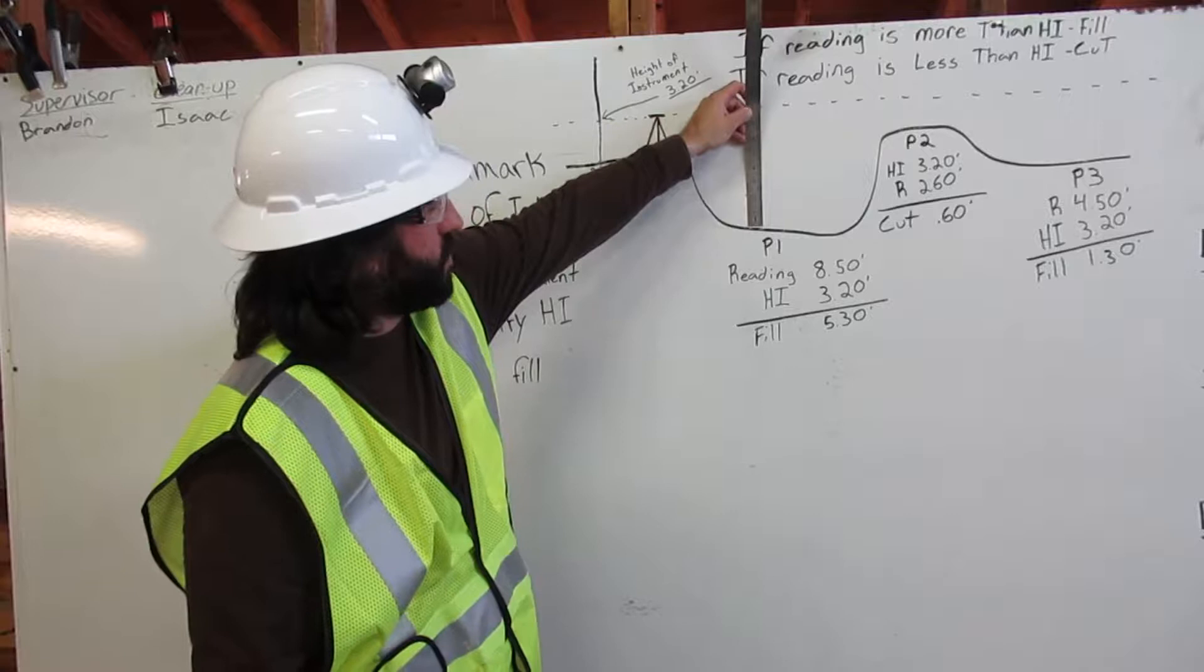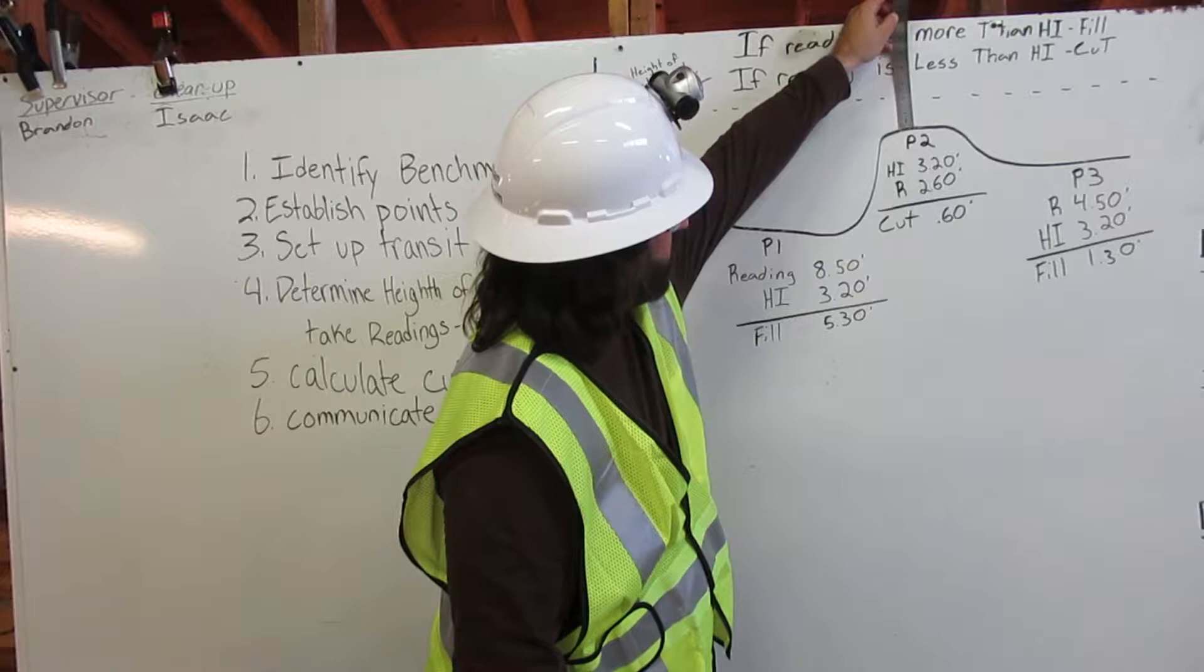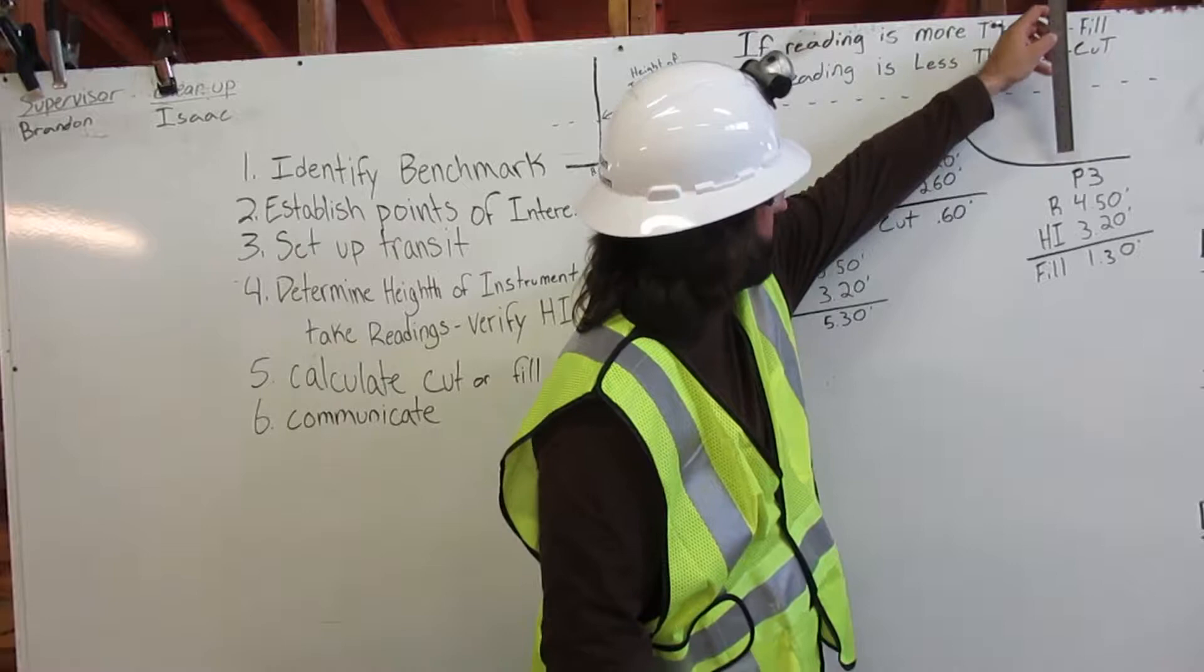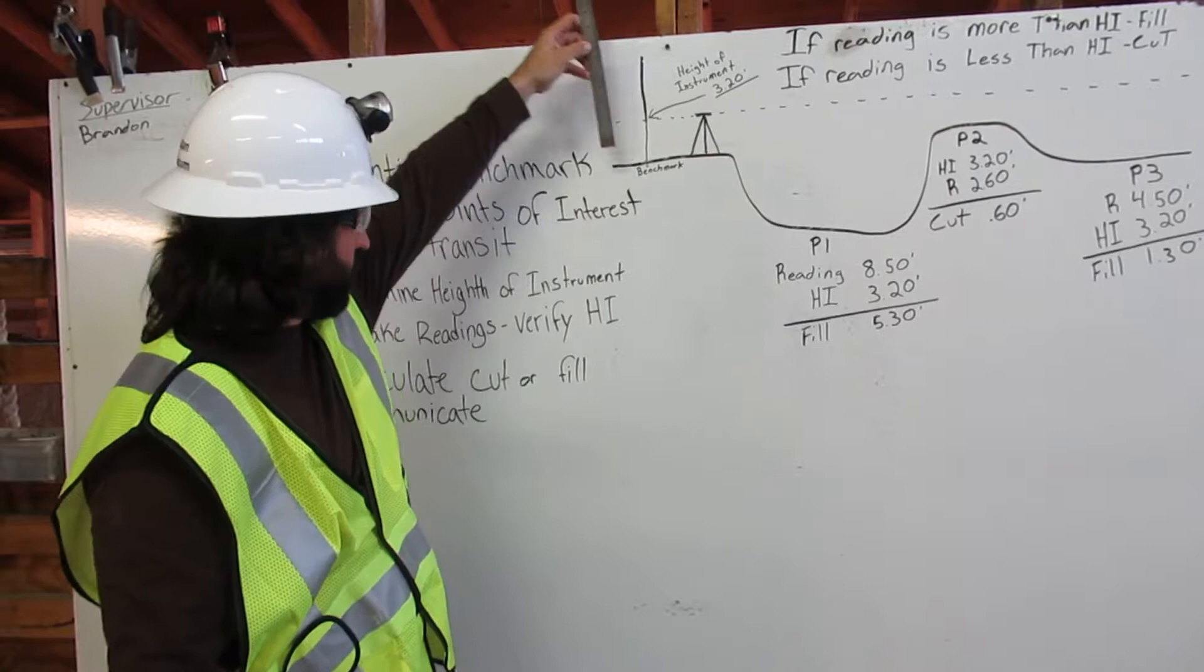At point one, our reading is 8.50 feet. At point two, our reading is 2.60 feet. And at point three, our reading is 4.50 feet. We are going to verify our height of instrument and it is 3.20 feet.